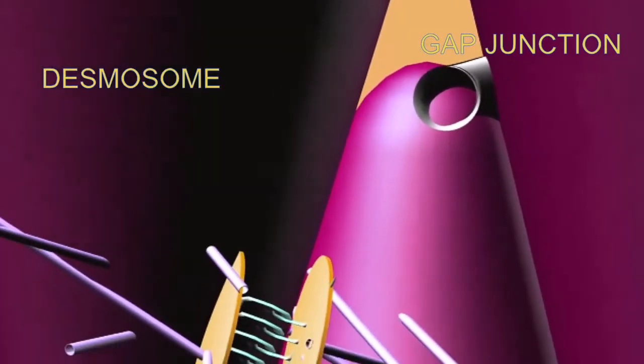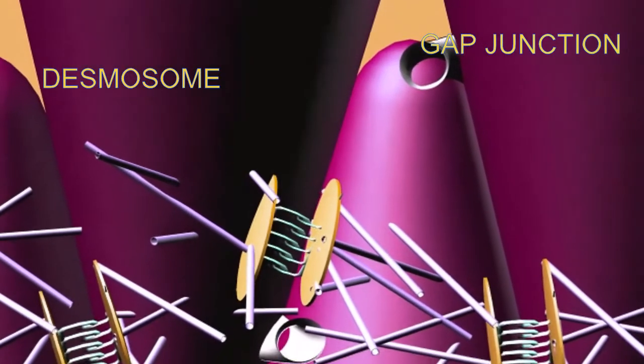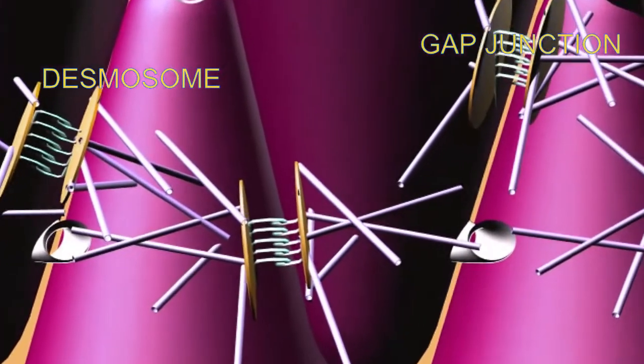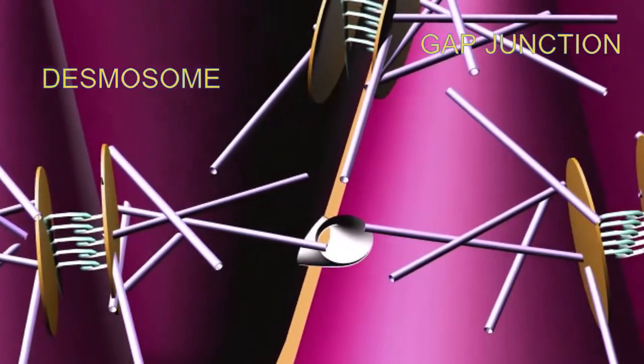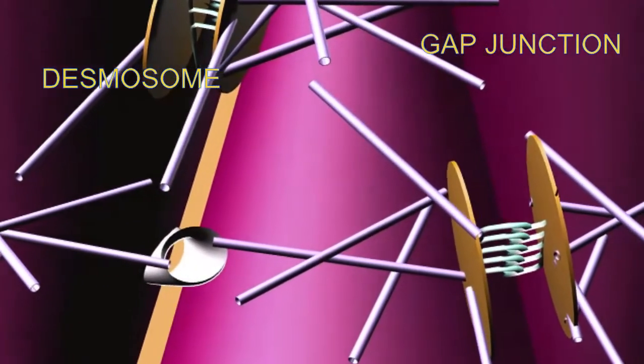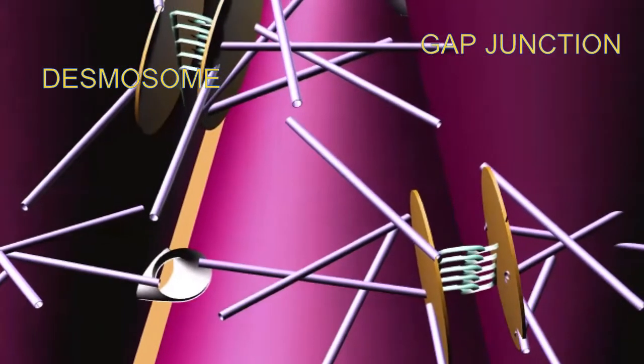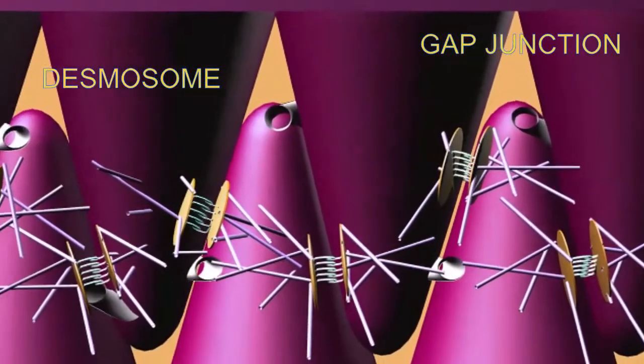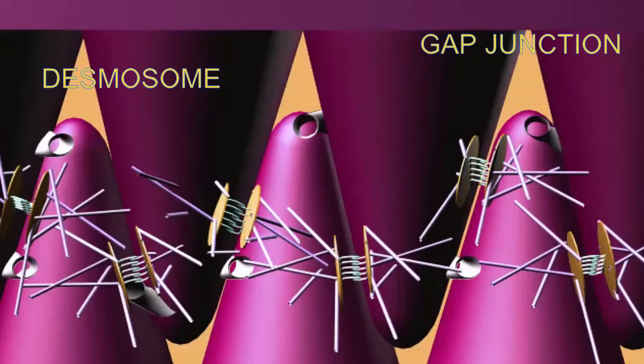Although the cardiac muscle cells are separate from each other and distinct cells, they are not a fused mass of cells known as a syncytium. They nevertheless act as a functional syncytium, because they are physically, chemically, and electrically joined because of these desmosomes and gap junctions.